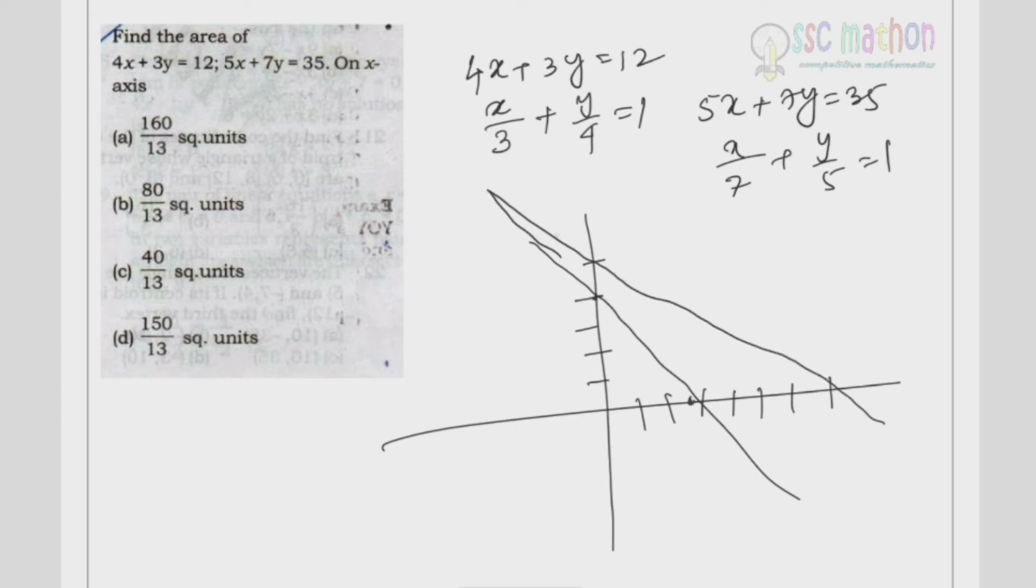Now how can we find the point? We are going to solve the equations: 4x + 3y = 12 and 5x + 7y = 35, multiplying by 5 and by 4.